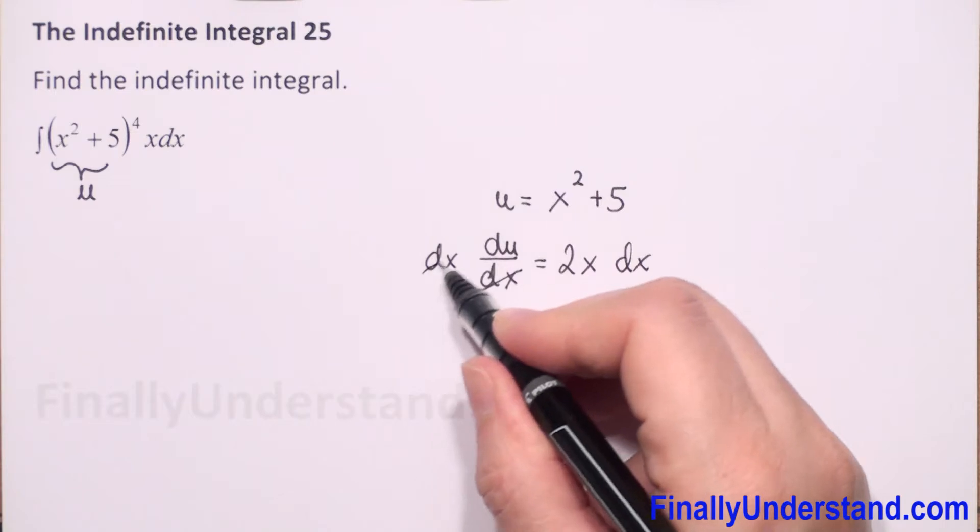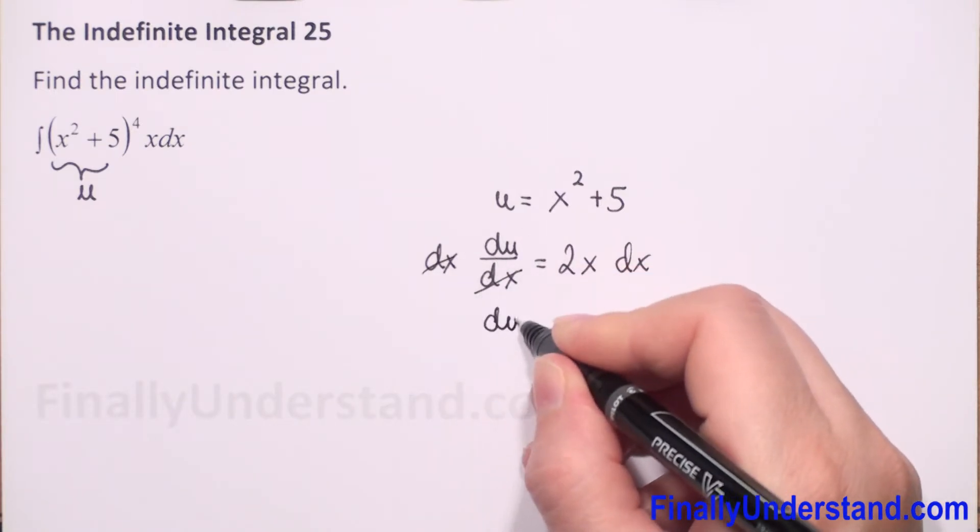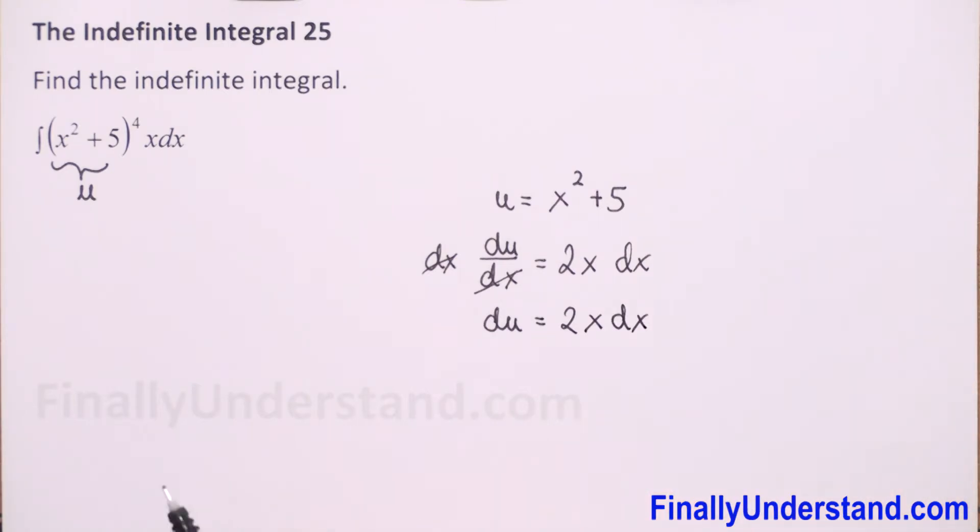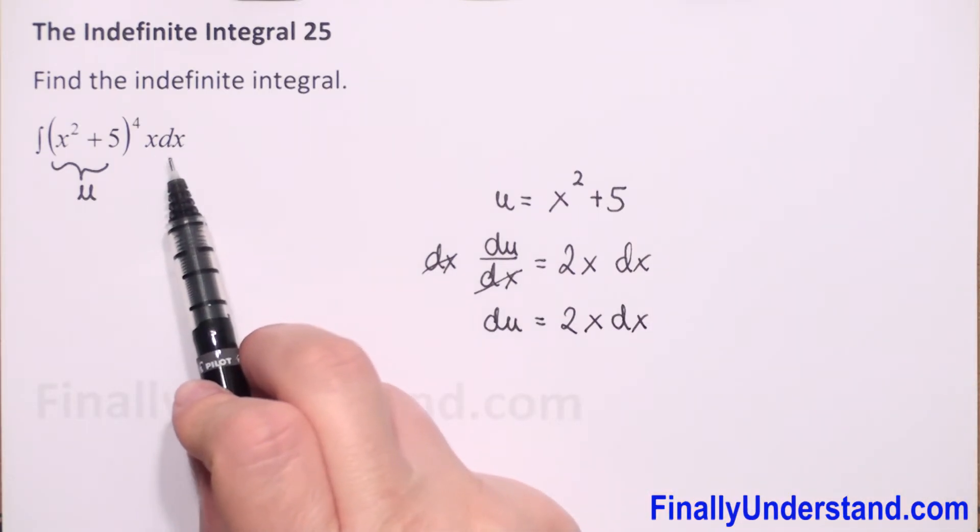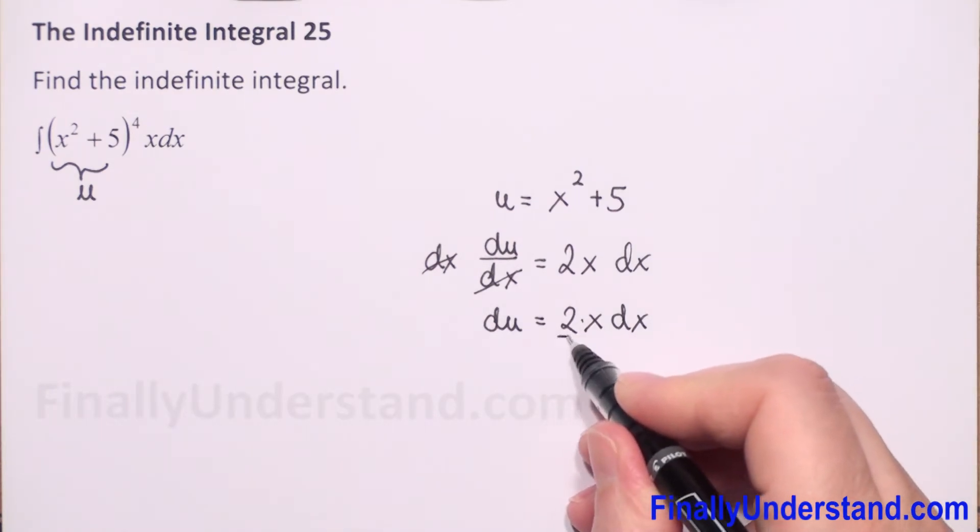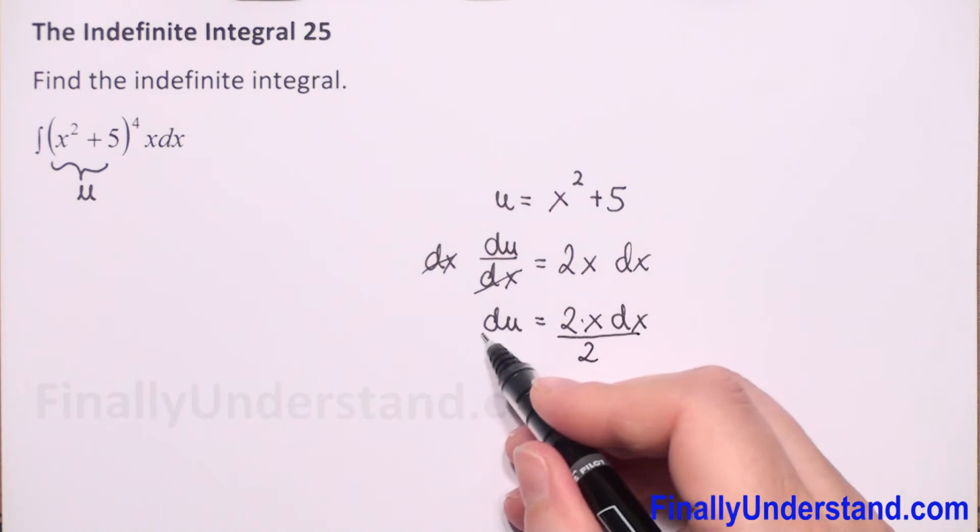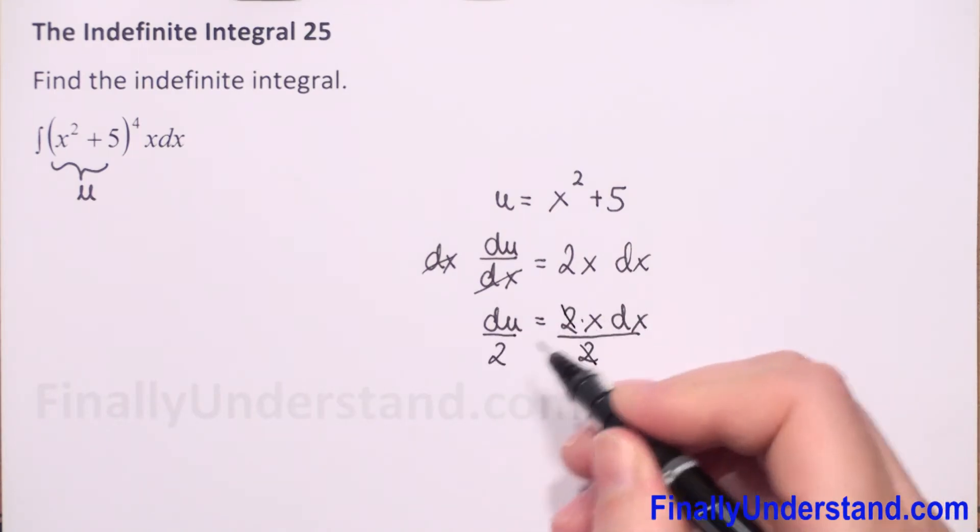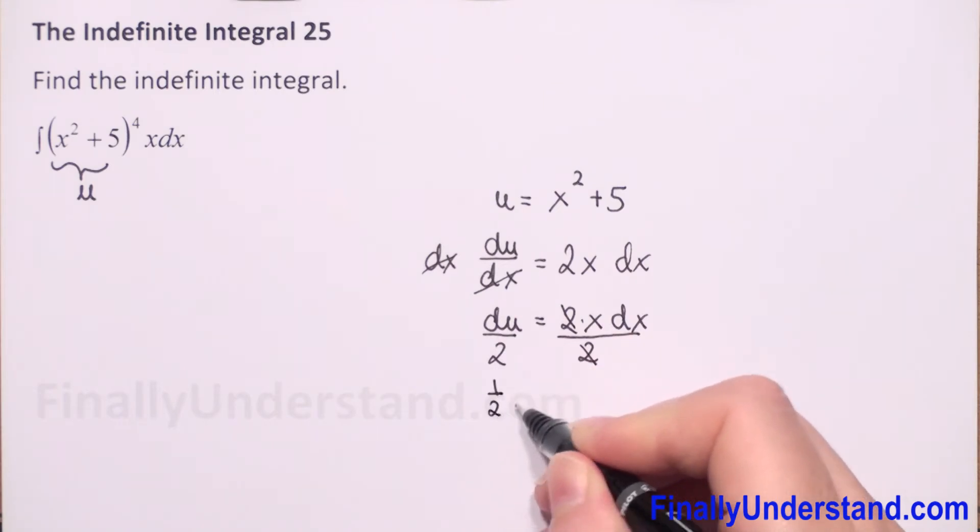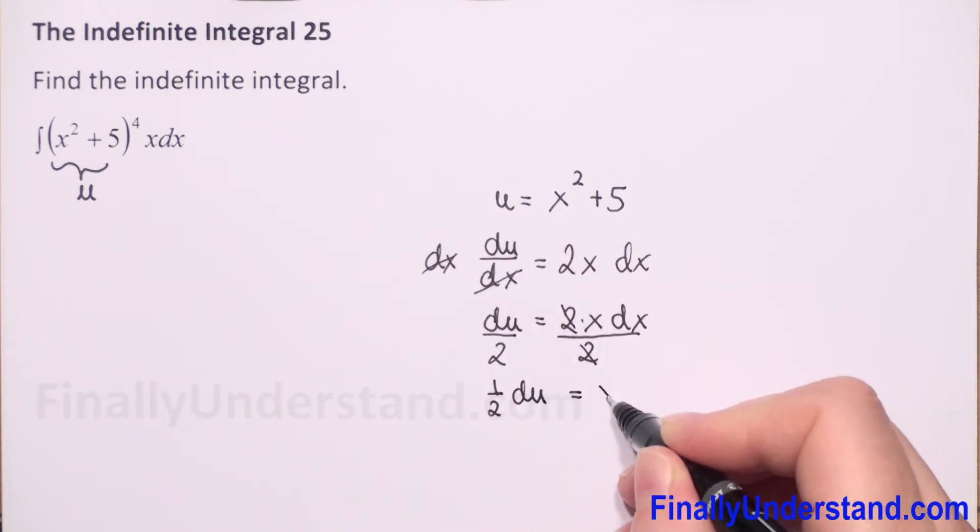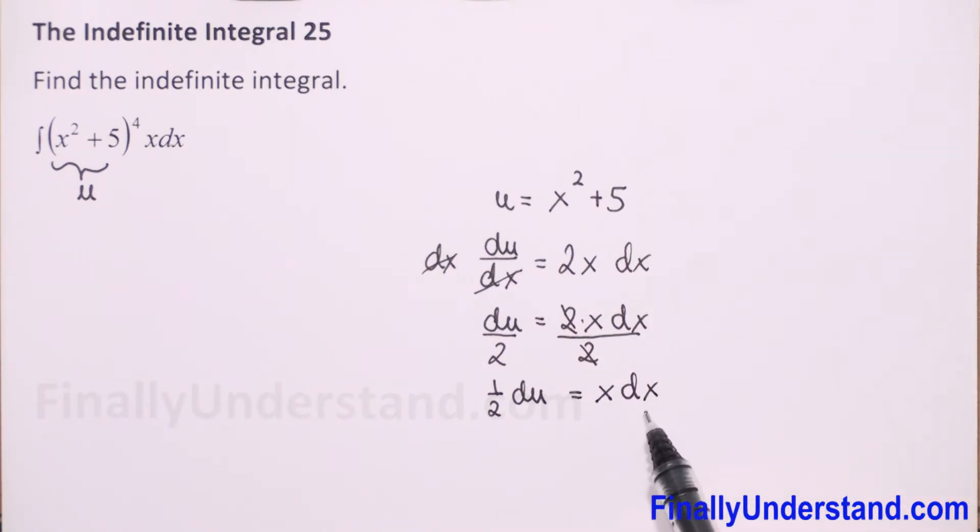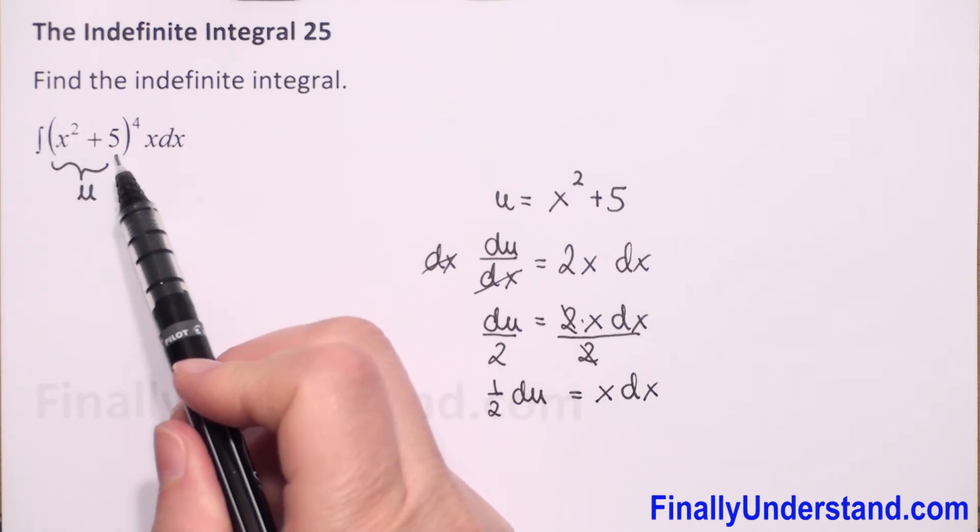So now we can reduce dx and we have du is equal to 2x dx. We have only x dx, so we don't need these two. Because we have multiplication, I can divide both sides by 2 and we will have one half du is equal to x dx.